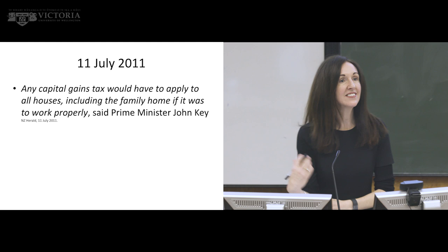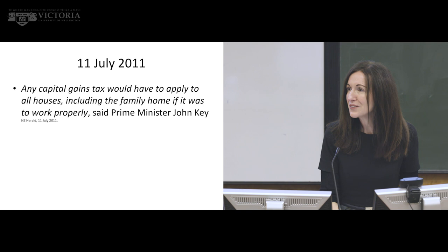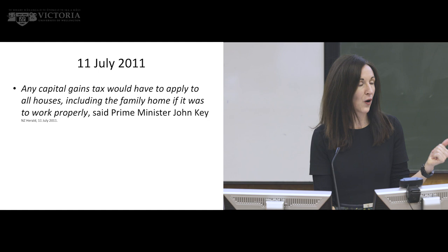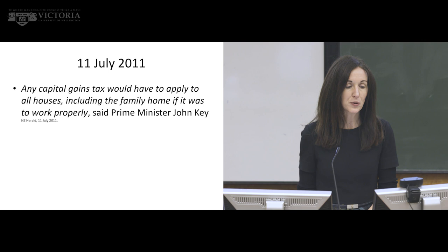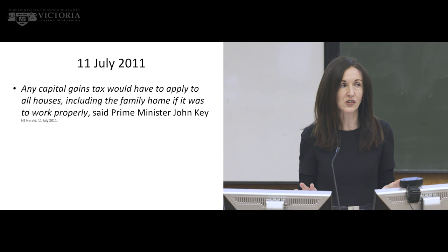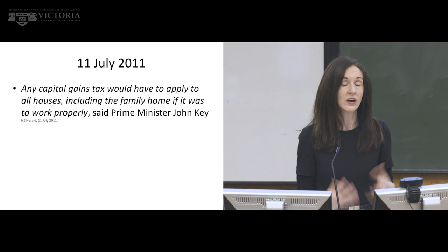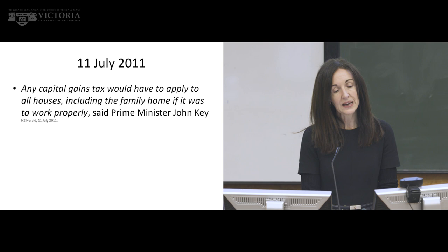As I said right at the start, this has become quite an election issue. Let me take you back six years ago, when this was a pretty big issue. When Labour proposed their capital gains tax in the election before last, John Key as Prime Minister said any capital gains tax would have to apply to all houses, including the family home, if it was to work properly. This was really unfortunate because it did shut down the debate and, to my mind at least, it stopped us having a really informed discussion of what a capital gains tax could be. This could be taken from the Donald Trump school of policy — there's very, very little truth in this statement.